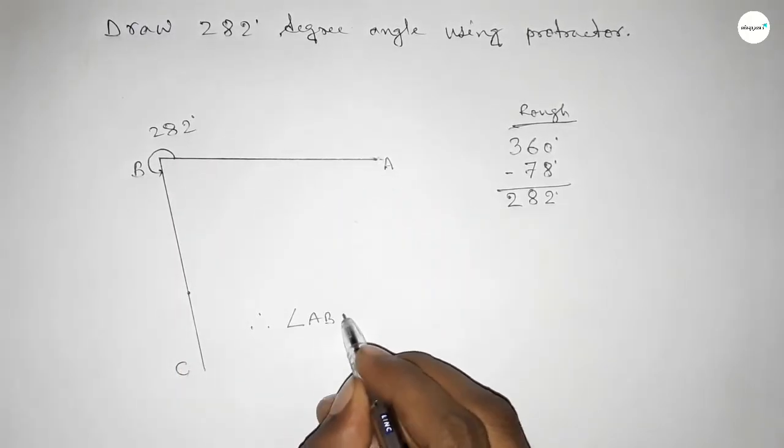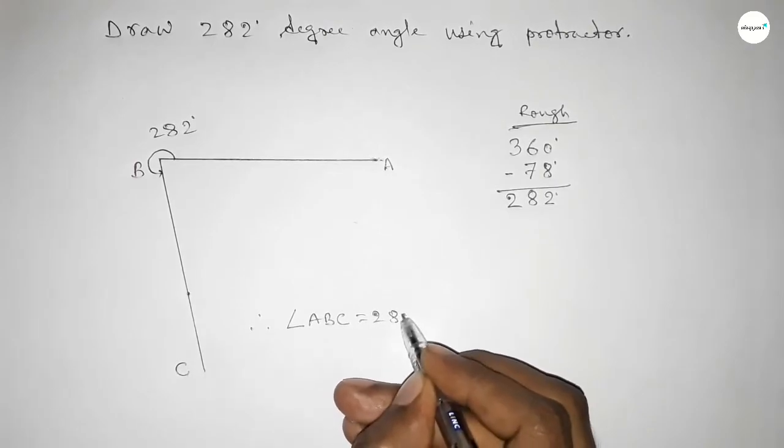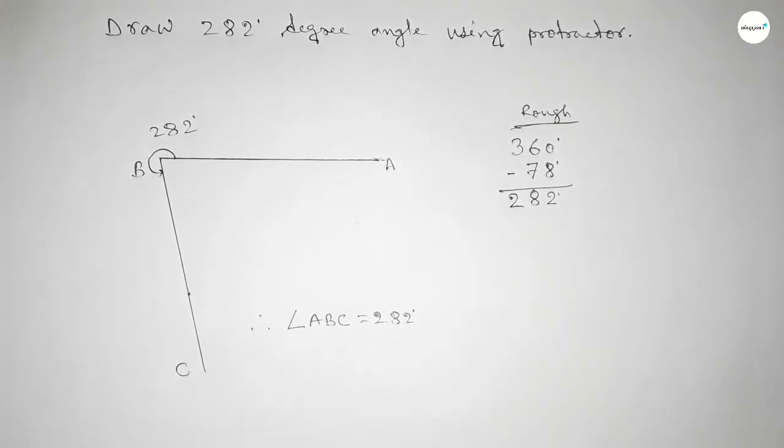Therefore, angle ABC equals 282 degrees. That's all. Thanks for watching. If this video is helpful to you, then please share it with your friends. Thanks for watching.